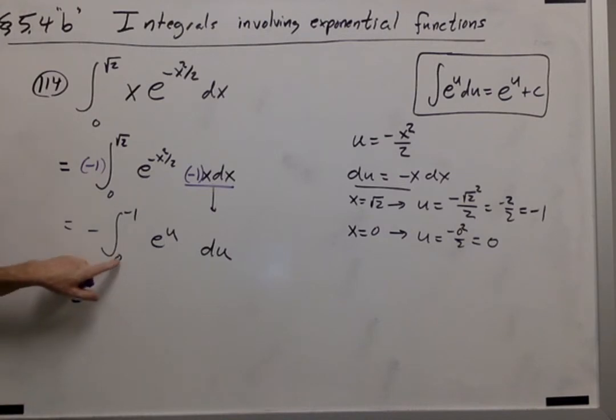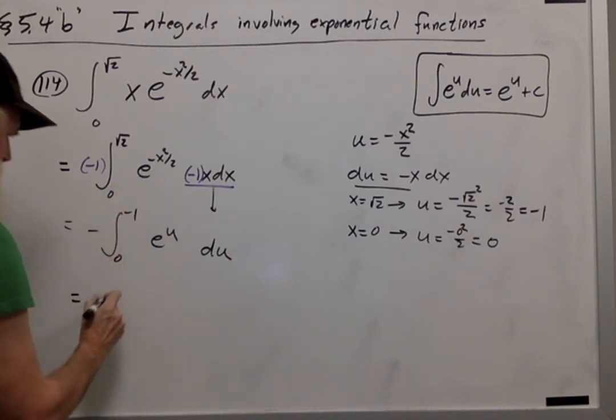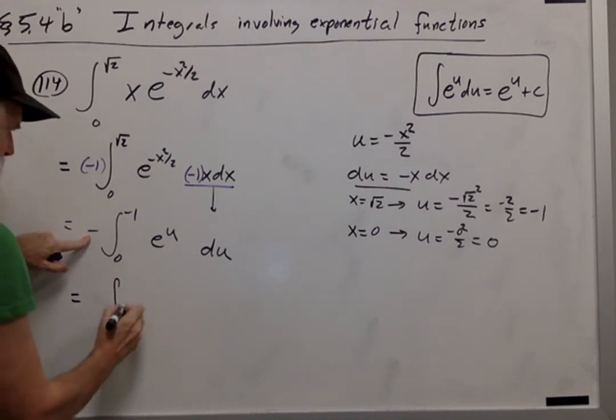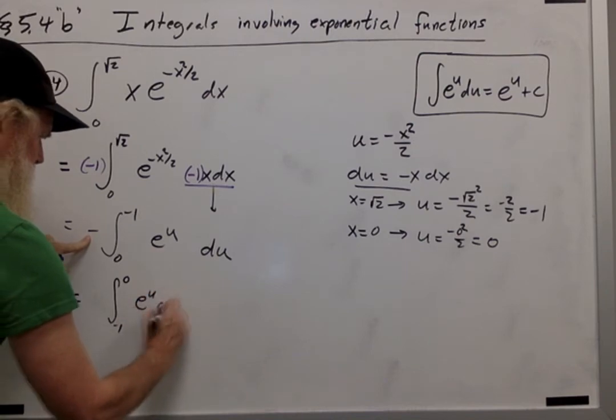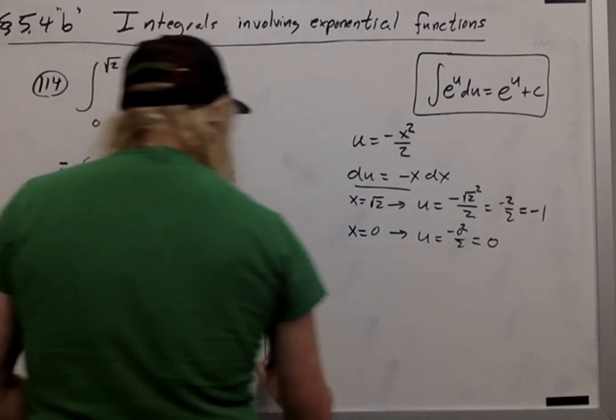Now if you think it's odd to have 0 on the bottom and negative 1 on the top, you can swap those, provided you change the sign in front. And now we can finish the problem.